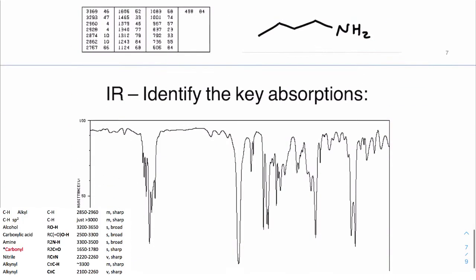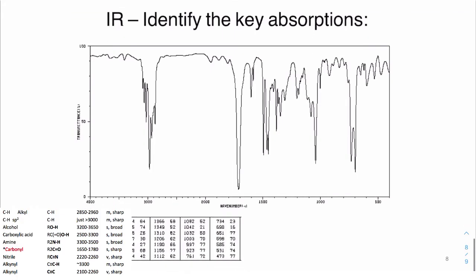For this next example, stop the video and analyze it yourself. We ignore the fingerprint region. We see a very strong distinctive signal for the carbonyl group. Just below 3000 are the sp3 hybridized CHs, the CH stretches.